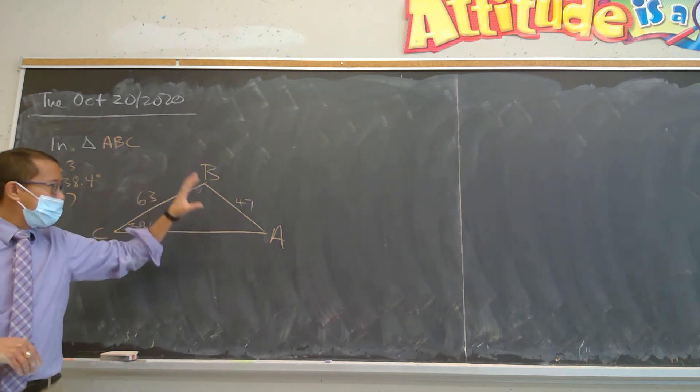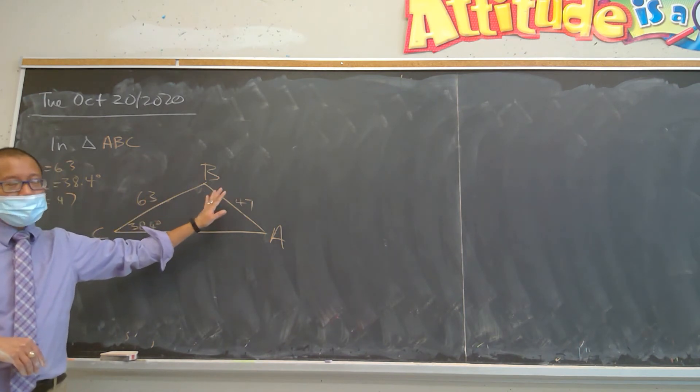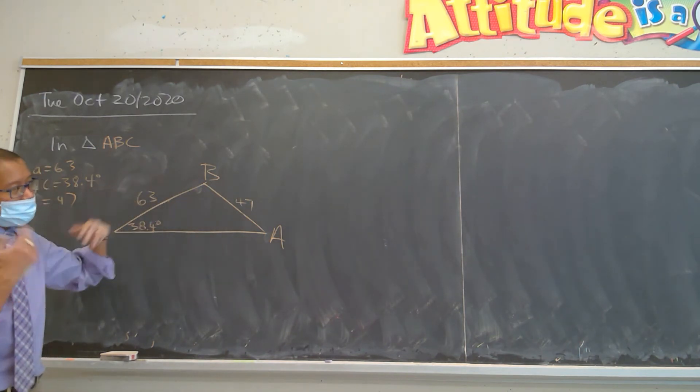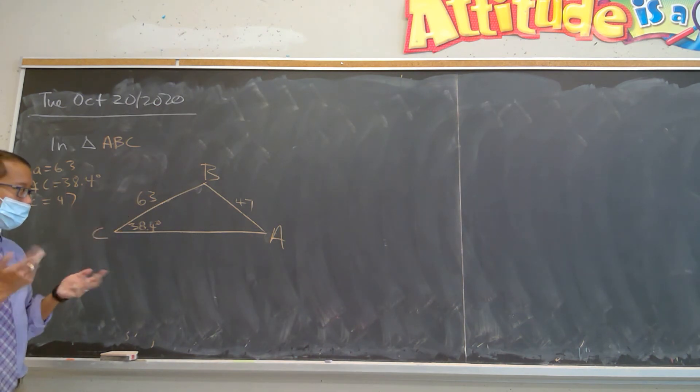Because maybe this triangle doesn't exist, maybe this is actually the height, or maybe it's the ambiguous case where we have two triangles, an acute triangle and an obtuse triangle.